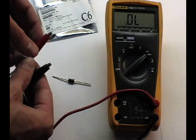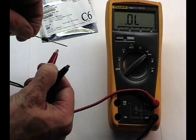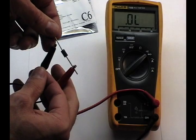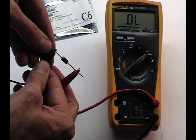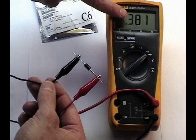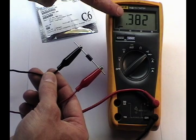If we attach the positive lead to the right side of this diode, the ground to the left, the meter will read the forward voltage drop. 0.38 volts. This indicates a good diode.